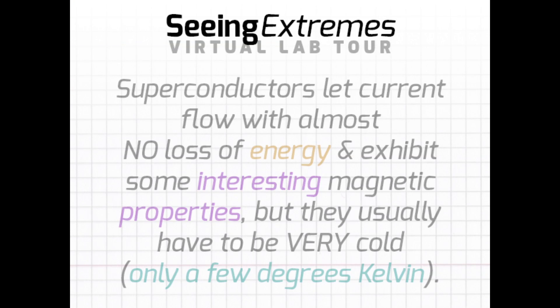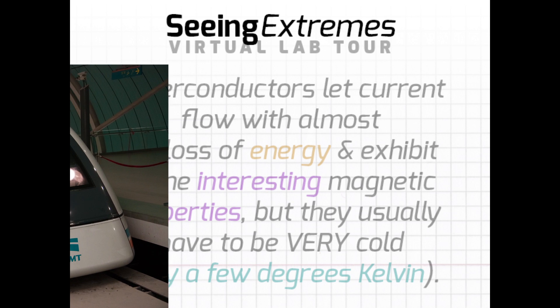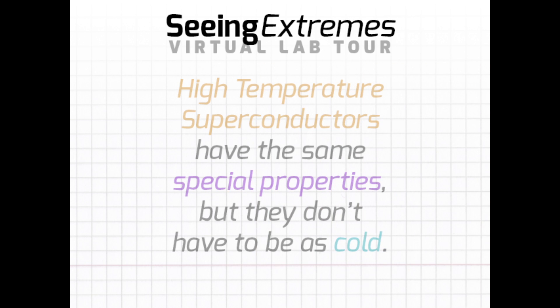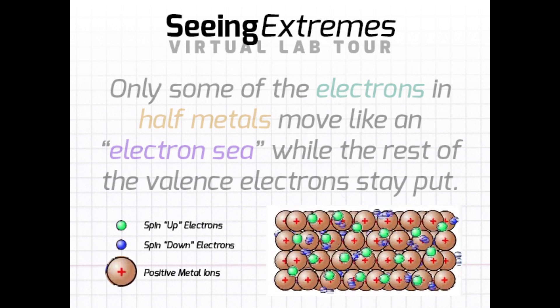Another class are half-metals, which are conductors with respect to electrons of one spin but insulators with respect to electrons of the other spin. For example, all the spin-up electrons could flow if you applied a voltage, but all the spin-down electrons are fixed in place. Another type of strongly correlated material are strongly magnetoresistant materials — materials that change their resistance based on an applied magnetic field.